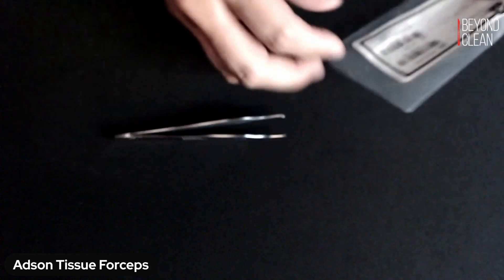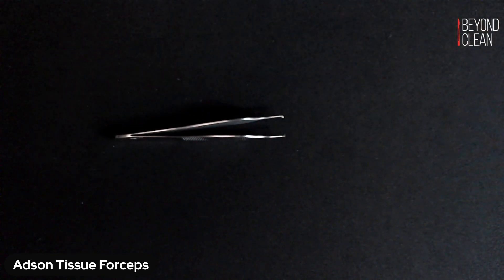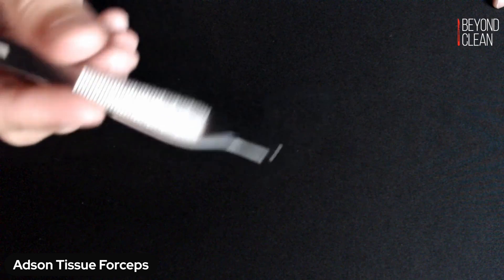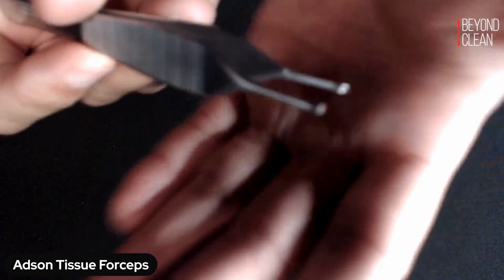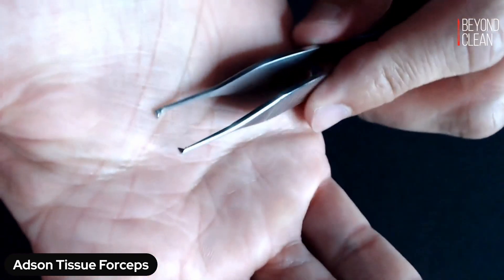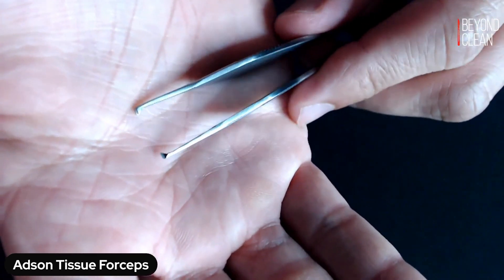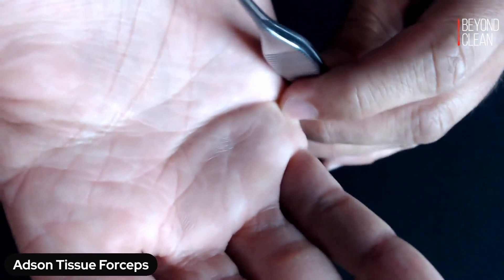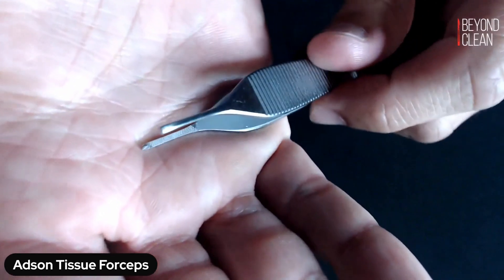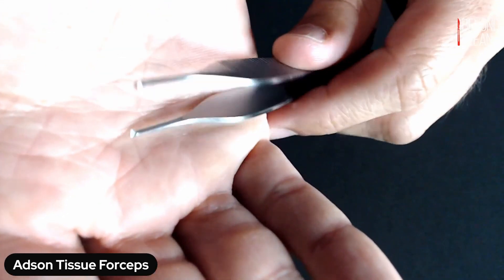All right. Anytime you see the word tissue in the forcep category, you're going to want to be looking for those teeth. And you can kind of see they're very small teeth here at the end. This is a 2-1 teeth combo on your Adson forceps.